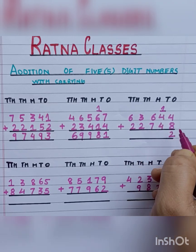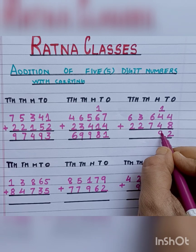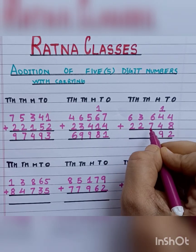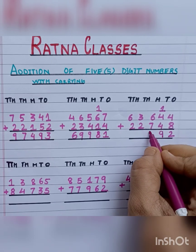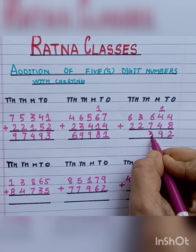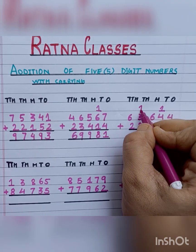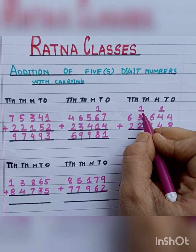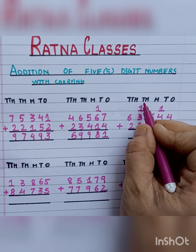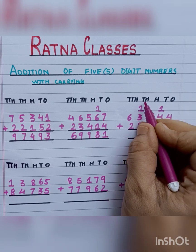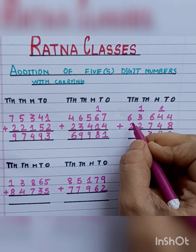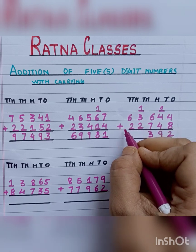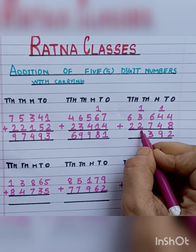5 plus 4 is 9. Now 6 plus 7 is 13 — we will write 3 here and take 1 carry. Now let's add the digits on the thousands place: 1 carry plus 3 is 4, and 4 plus 2 is 6.